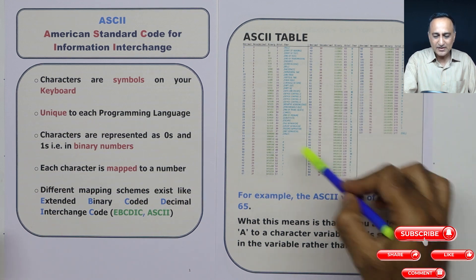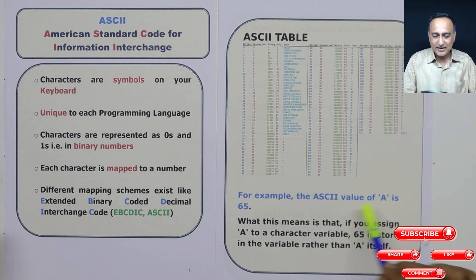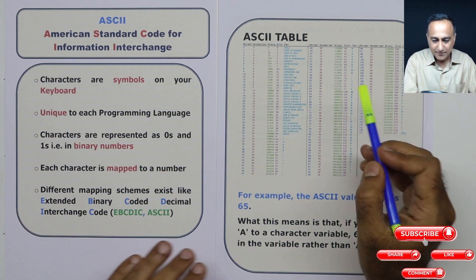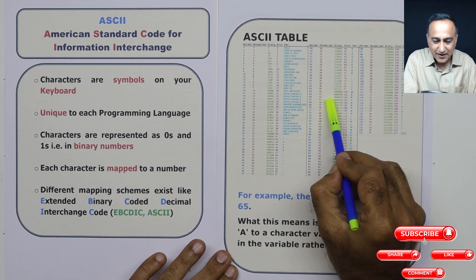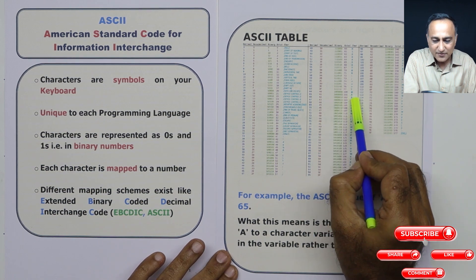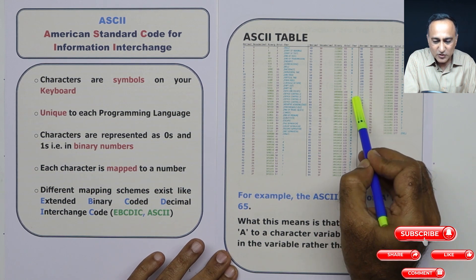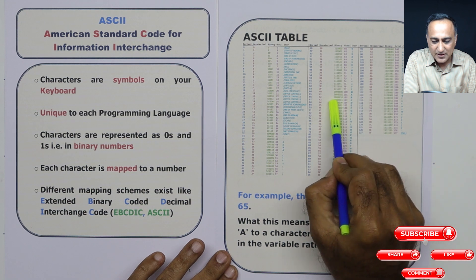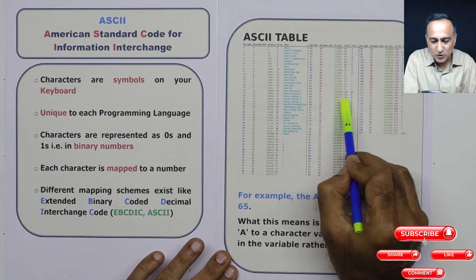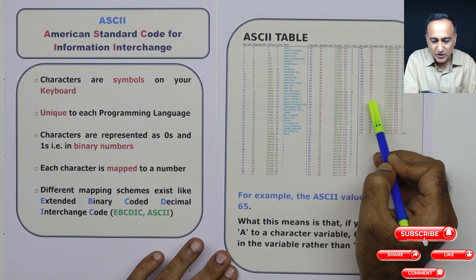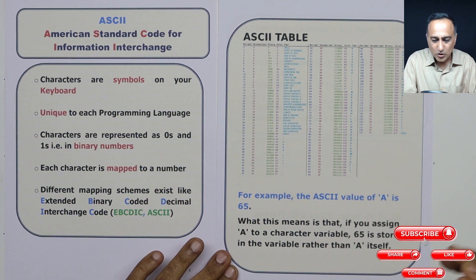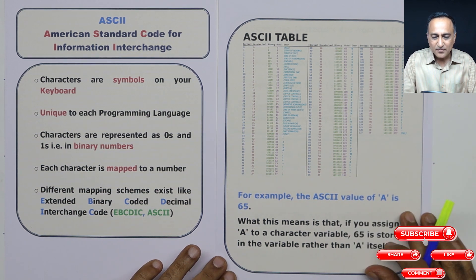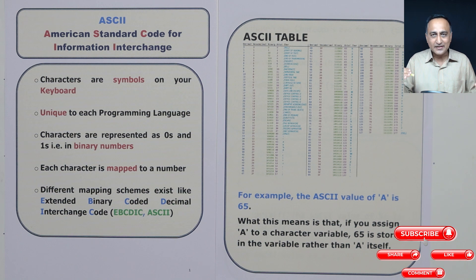If you look at this chart, the ASCII value of character A is 65. You can see here that this is 65 and the character A is shown alongside it. A is represented in binary as a certain sequence of ones and zeros, and in octal it is represented as 101. This is the way characters are represented internally in a computer.